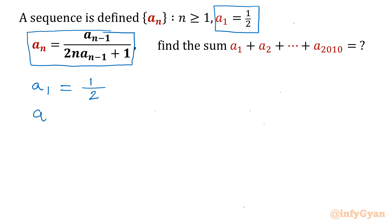Now let us consider a2. For a2 I will use our sequence an with n = 2. So I will write a(2-1) over 2 times 2 times a(2-1) plus 1. Let's put the value of a1: a1 in the numerator and 4 times a1 plus 1. So 1/2 over 4 times 1/2 plus 1. So I will be getting 1/6.